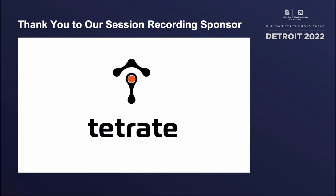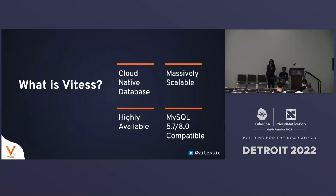If we look at some of the numbers, the largest instances of Vitess run to 20,000 terabytes, which is 20 petabytes, 22,000 replicas, 250,000 simultaneous connections, though that is not a limit — you could go higher and so on.